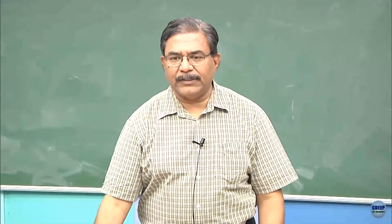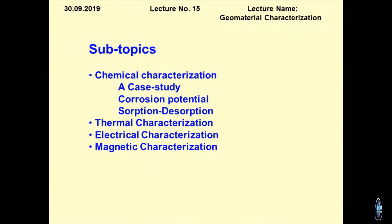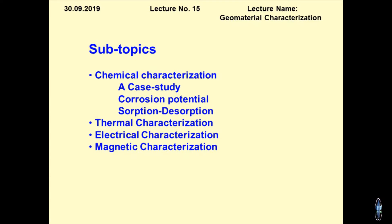We have been talking about material characterization, particularly chemical characterization. I will cite one example, a case study which was done by us a few years back, followed by the corrosion potential — a very important topic today — where pipings and underground or buried structures require studies to be conducted. After this I will be switching over to sorption-desorption and then thermal, electrical and magnetic characterization.